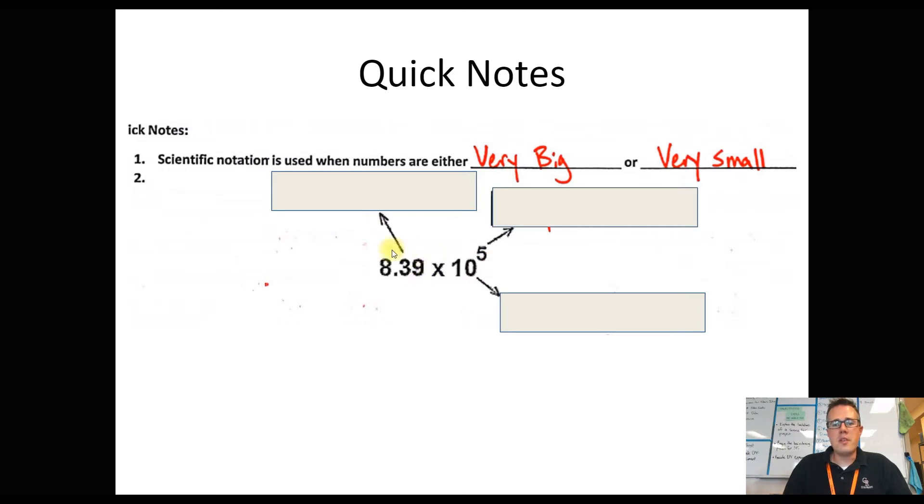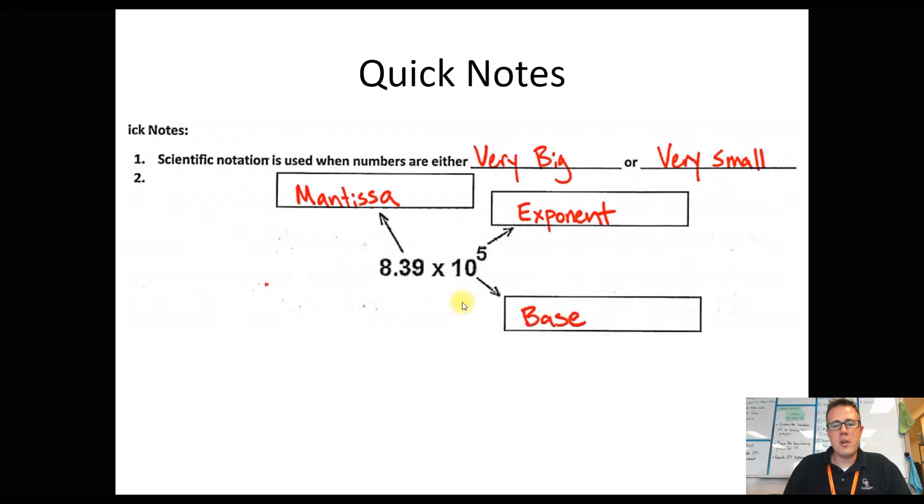Each part of scientific notation has a name. The very first part is called the mantissa. It's the first numbers at the very beginning here. The next part is called the exponent. That's the little number that we write up top. And then, of course, the last number we call the base.